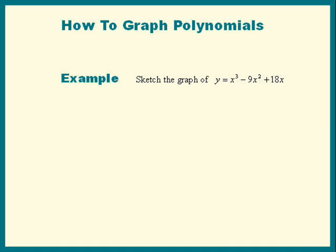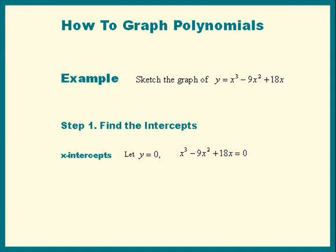I always like to find the intercepts first because that's the easy part of the problem. To find the x-intercepts we set y equal to 0. This can be factored into x times x squared minus 9x plus 18. And that factors further into x minus 3 times x minus 6.